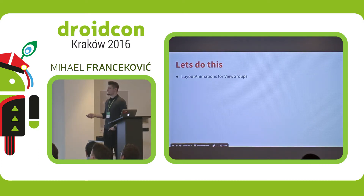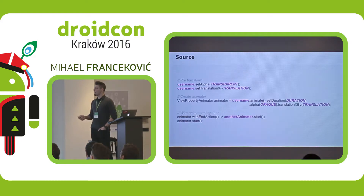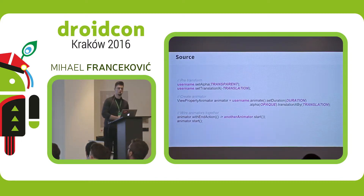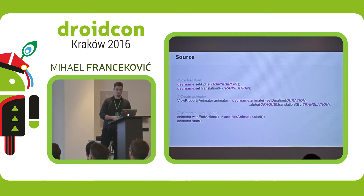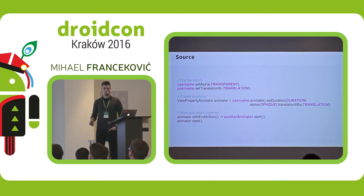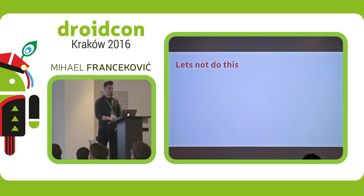Initially, we could do some layout animations for view groups, maybe view property animator for the views. At first it looks okay, it will probably work. It looks something like this: we have to pre-transform our views, create view property animators, and wire them up together. This all happens in the view. And for me, this is actually really bad, because you have to do a lot of stuff. Animators know about other animators. When you have, like, 10 views — this is a real deal, and it has a lot of code right there. So let's not do this.